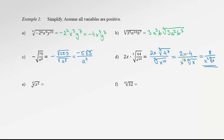Let's look at the 4th degree root of x squared. Here we can't take anything out of the radical because the exponent is lower than the index. However, we could rewrite this in exponential form: x to the 2 quarters. Then we simplify 2 quarters to 1 half, and x to the 1 half is the same as the square root of x. So we could still simplify this root.